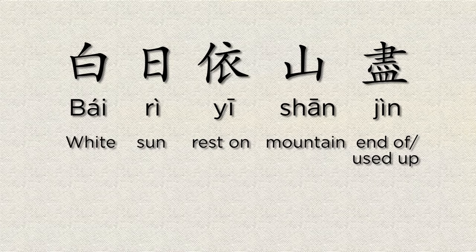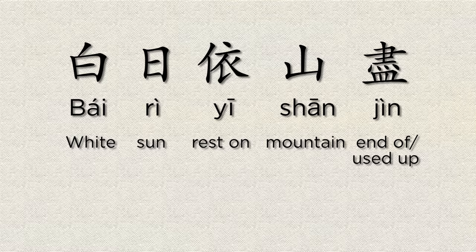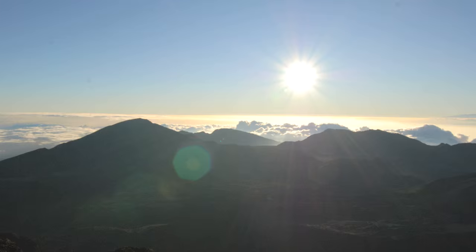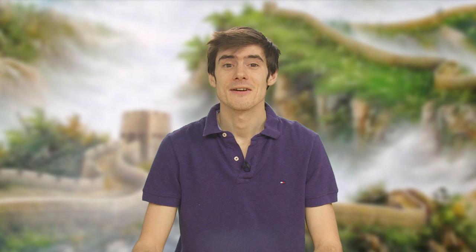So let's take a look at the first line: 白日依山盡. The first line reads: 白日 — the white sun; 依 — to rest on; 山 — mountain; 盡 — to reach the end of, or to be used up. So this can be thought of as the white sun reaches its end resting on the mountains. The sun sets resting on the mountains.